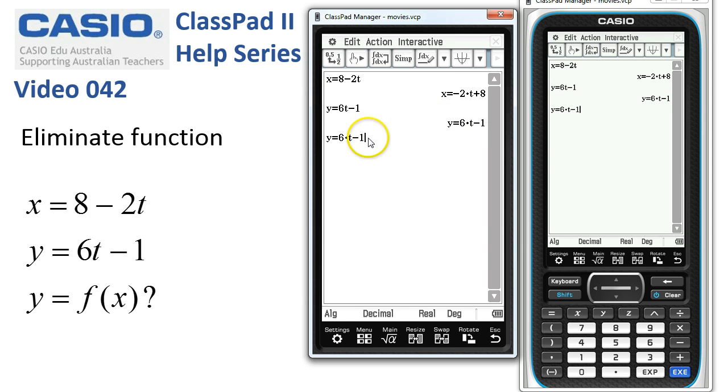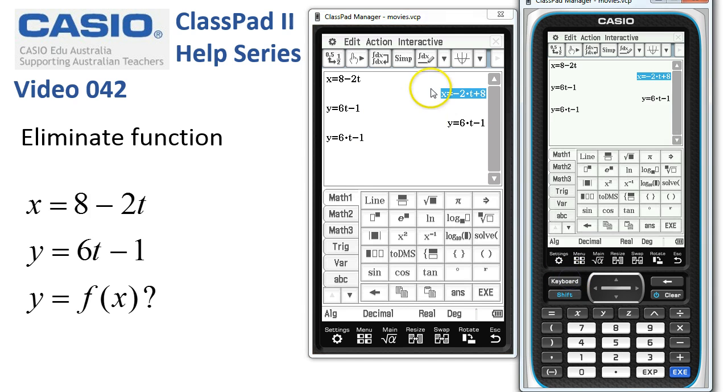Copy, pop it under the next line. Up here I'm just going to grab the keyboard and take a copy of the expression we want to use to eliminate t, using the copy item down here.